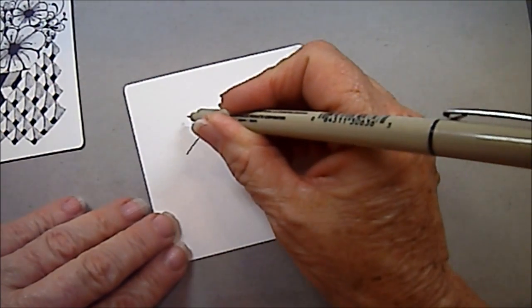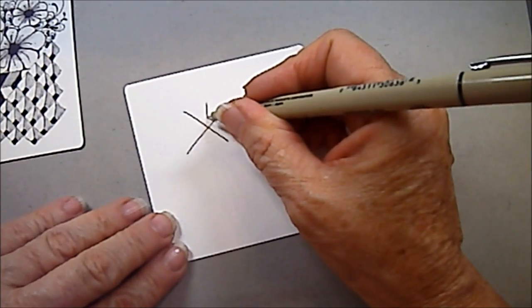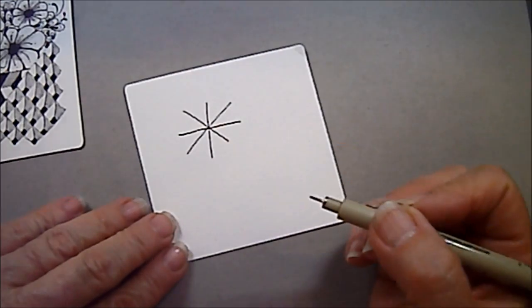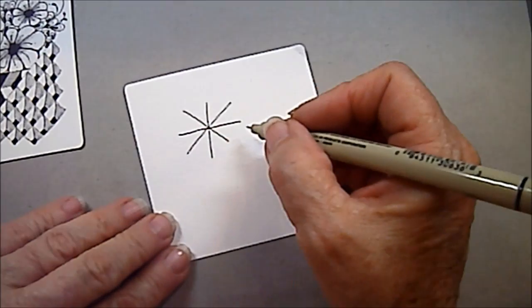And we just start out with an X. It can be any size. Then cross lines going on all, so you have four different lines on there, so you have eight sections.